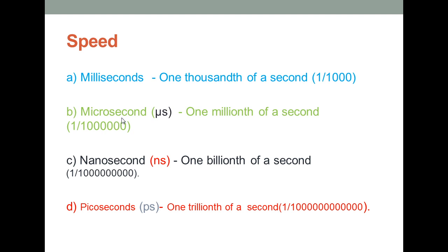The next unit of speed is microsecond, denoted with the symbol μs, and it is equivalent to one millionth of a second, which means it can be expressed as 10 to the power minus 6 seconds. After that, the next unit is nanosecond, denoted as ns, equivalent to one billionth of a second, or 10 to the power minus 9 seconds.